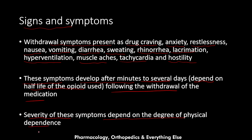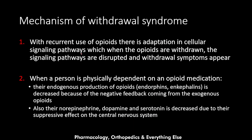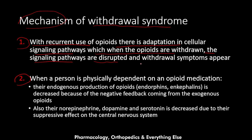How does withdrawal syndrome occur? There are two mechanisms. The first is that with recurrent use of opioids, there is adaptation in cellular signaling pathways. When opioids are withdrawn, these signaling pathways are disrupted between the cells and the withdrawal syndrome symptoms appear.